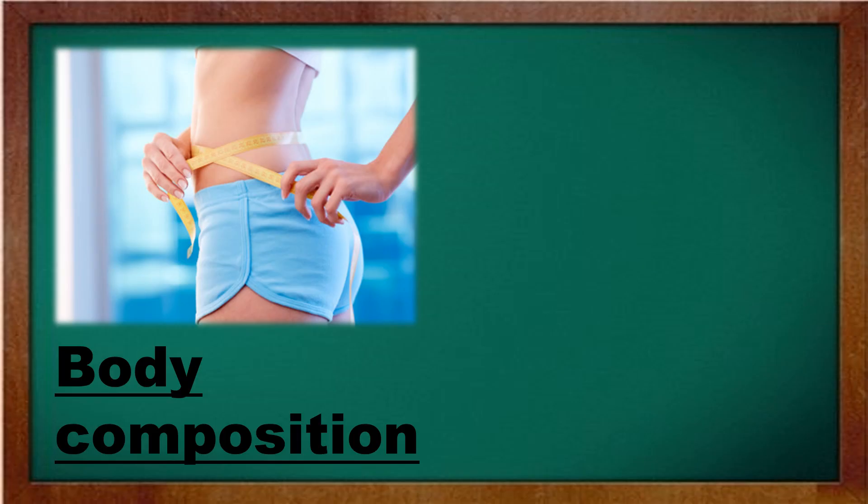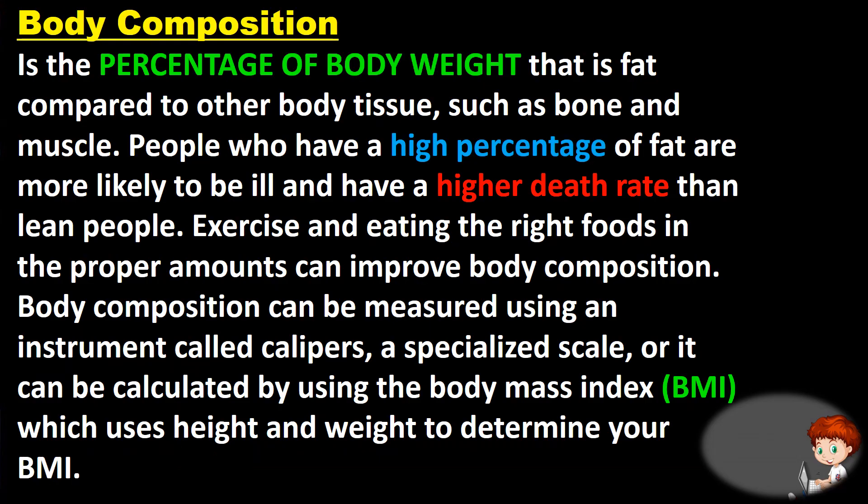Body composition is the percentage of body weight that is fat compared to other body tissues such as bone and muscle. People who have a high percentage of fat are more likely to be ill and have a higher death rate than lean people. Exercise and eating the right foods in proper amounts can improve body composition. It can be measured using calipers, a specialist scale, or calculated using the Body Mass Index (BMI).